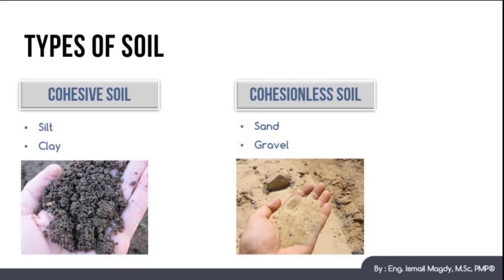As we can see here, you can shape cohesive soil in your hand and they will keep their shape because the soil particles have cohesive strengths between each other. While on the other hand, if you try to hold cohesionless soil such as sand in your hand, they will directly flow out of your hand because there is no cohesion force between the soil particles.